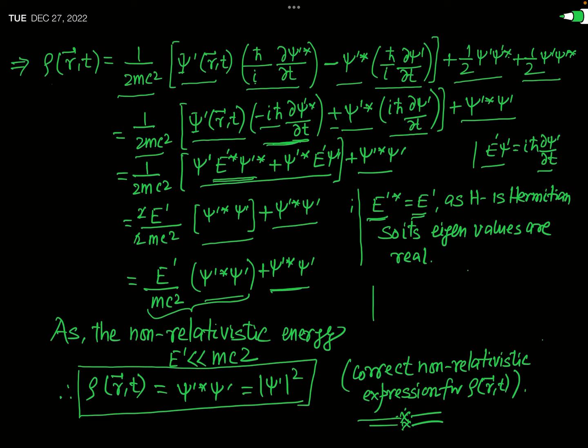In conclusion, the probability density expression obtained from the Klein-Gordon equation reduces to its correct non-relativistic equivalent when the non-relativistic energy is much smaller than the rest mass energy of the particle. In the next lecture on the Klein-Gordon equation, we will explore some more interesting concepts. Thank you.